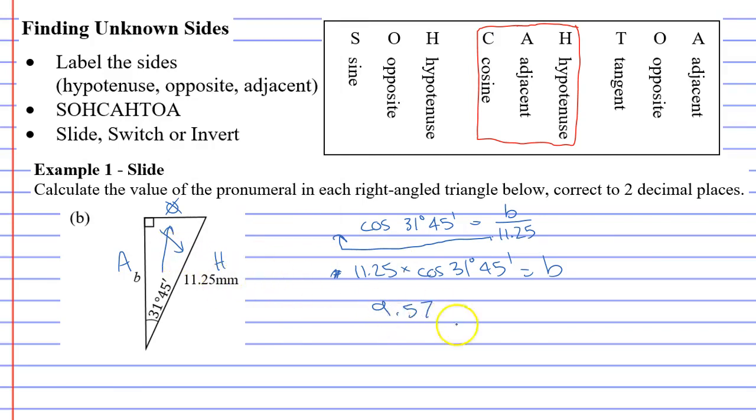And this is in millimeters, so we need to put our units in. And we can rearrange it so it's B equals 9.57 millimeters. And that concludes example one.